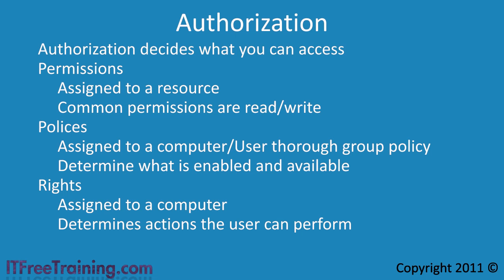An example of a right is being able to log on to the computer — you are either allowed or you are not. Another example is the take ownership right assigned to administrators. Regardless of what permissions are assigned to a file, administrators can take ownership of that file because they have the take ownership right assigned to them by default.